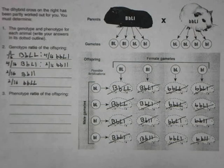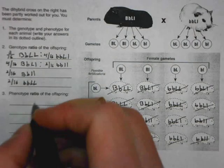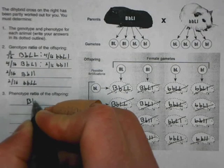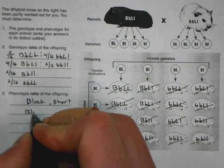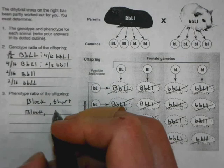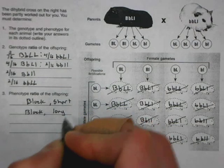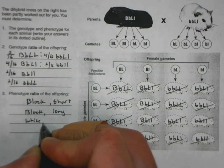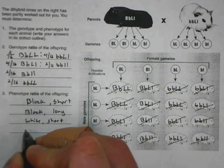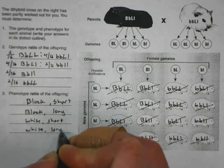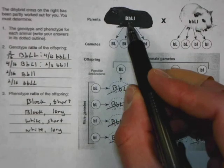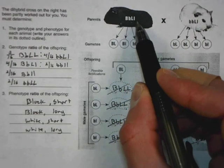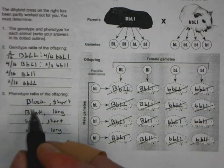To determine the phenotypes, I first like to write the different combinations. I could have black and short hair, black and long hair, white and short hair, or white and long hair. Going back to the parents' genotypes, we know that black hair is dominant and short hair is dominant, because of the capital L for short hair.